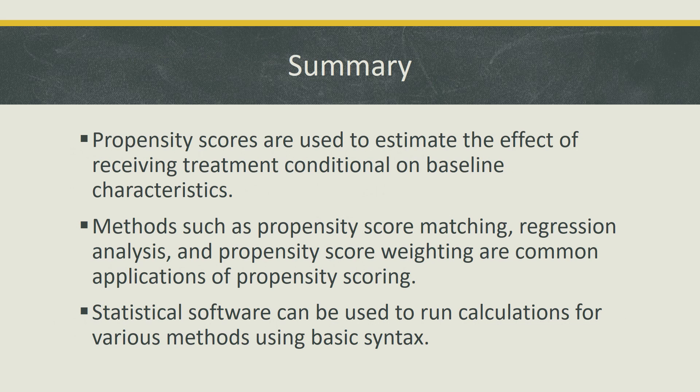In summary, propensity scores are used to estimate the effect of receiving treatment conditional on baseline characteristics. Different methods like propensity score matching, regression analysis, and propensity score weighting are common applications of propensity scoring. Statistical software like STATA and SAS can be used to conduct calculations associated with propensity scoring. I hope this video provided some insight on propensity scoring and the various methods associated with it. Please check out the references listed for additional information, and thank you for watching.